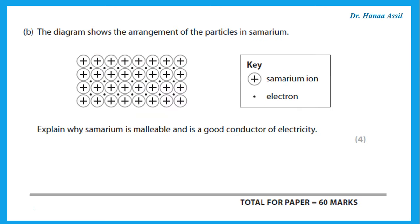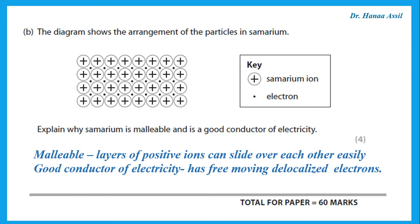The last question shows the arrangement of particles in a metal. Samarium is a metal, so this is a normal metal structure. Explain why this metal is malleable and is a good conductor of electricity. Any metal is malleable because layers of positive ions can slide over each other easily. A metal can conduct electricity because of free-moving delocalized electrons.